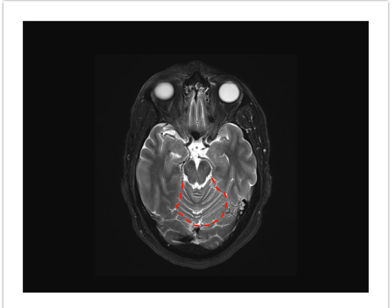This curved dashed line demarcates the margin where the tentorium separates the cerebellum below from the cerebral hemispheres above. The tentorium tapers superiorly like a cone, a feature better seen on the coronal. Once again we see the anterior clinoid processes, which influence the course of the internal carotid arteries as they leave the cavernous sinus. Anterior clinoid processes also form the lateral walls of the optic foramina that conduct the optic nerves.